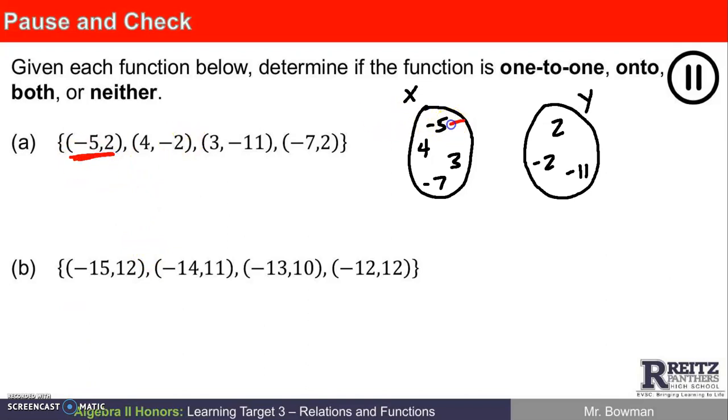So negative 5 goes to 2. 4 goes to negative 2. Looks like 3 goes to negative 11. And it looks like negative 7 belongs with 2 as well.